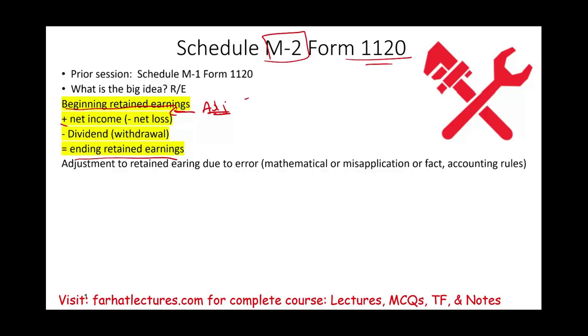If you made any adjustments to beginning retained earnings. When you make an adjustment, it means something is changing. And what is changing? Many things could be changing. You could be making an adjustment due to an error. There was an error in the prior year. It could be a mathematical error, a misapplication of fact, a misapplication of accounting rules. There was some fraud going on. There was some adjustment to your beginning retained earnings.